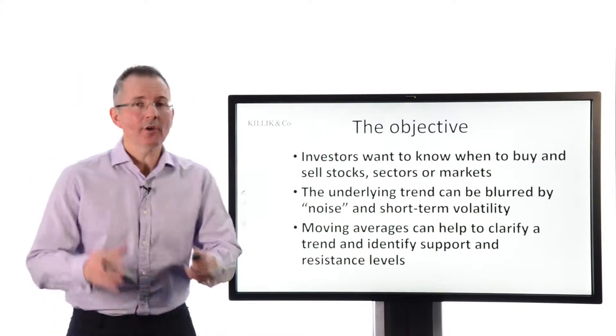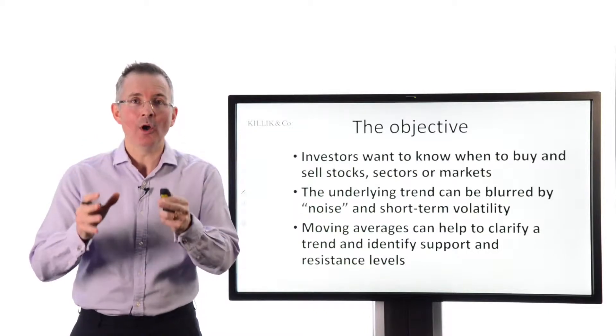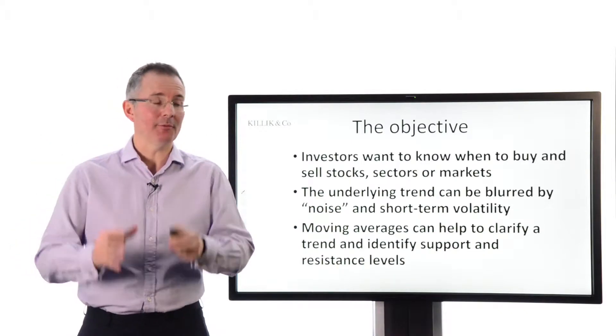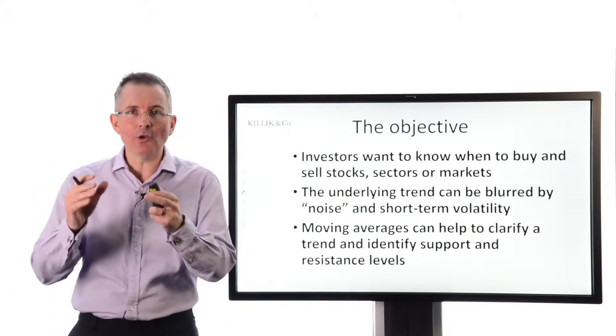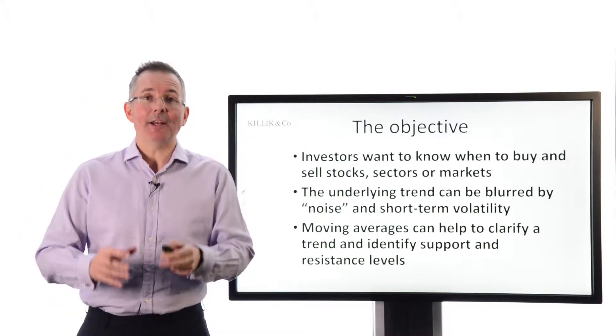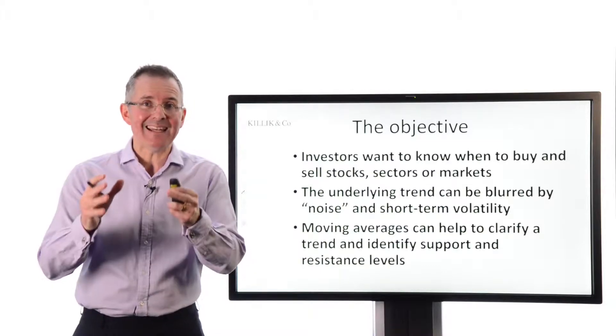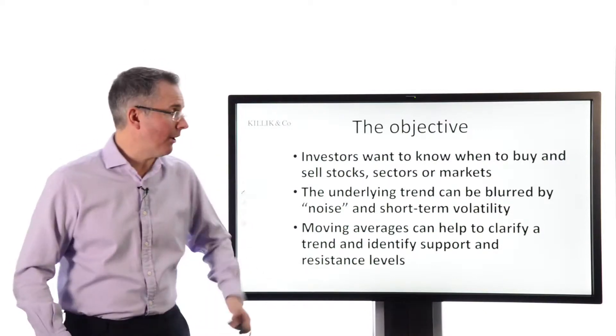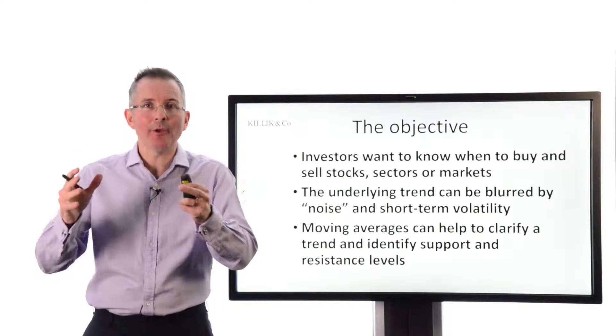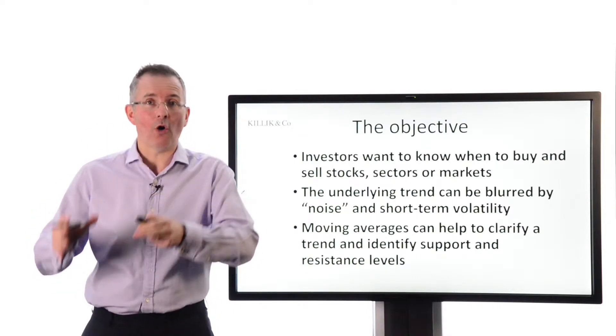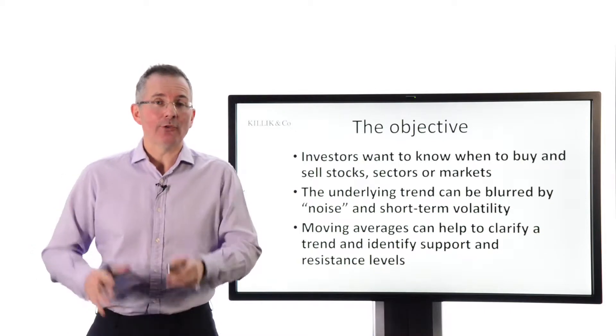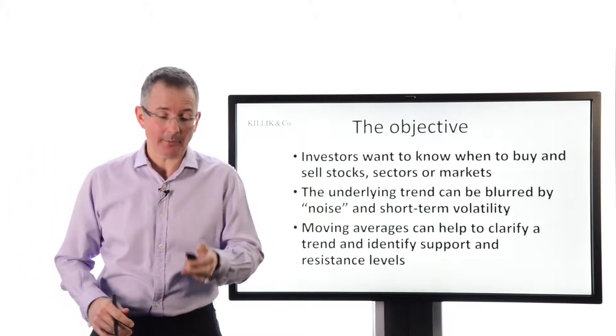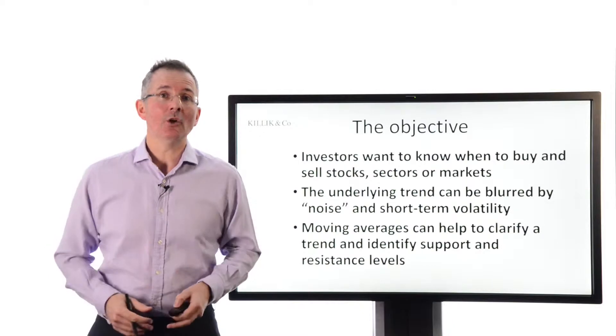So the objective. Basically what we're trying to do here is get to a position where we can tell whether we should buy or sell a stock. Always worth bearing in mind that all this science and all these charts, that's the ultimate objective. The underlying trend can be blurred by noise and short-term volatility. Now I touched on that in an earlier presentation. Is there a technique that can take out some of the noise, take out some of the distracting movement in share prices and give us a clearer picture? And the answer is, there is something called a moving average. It can help us to focus on the true picture in relation to a stock or a sector or an index. And it can also help us to identify turning points, support and resistance levels, as they're sometimes known. So it's potentially quite a useful tool.